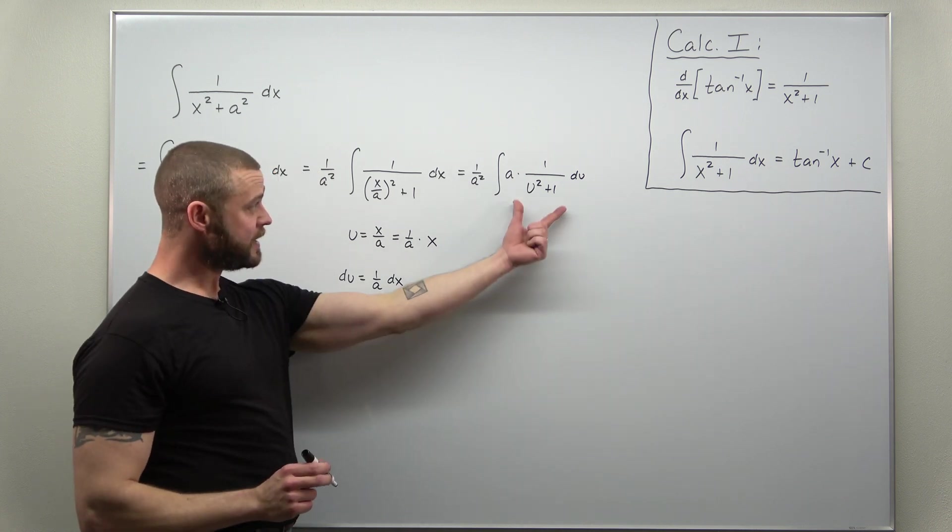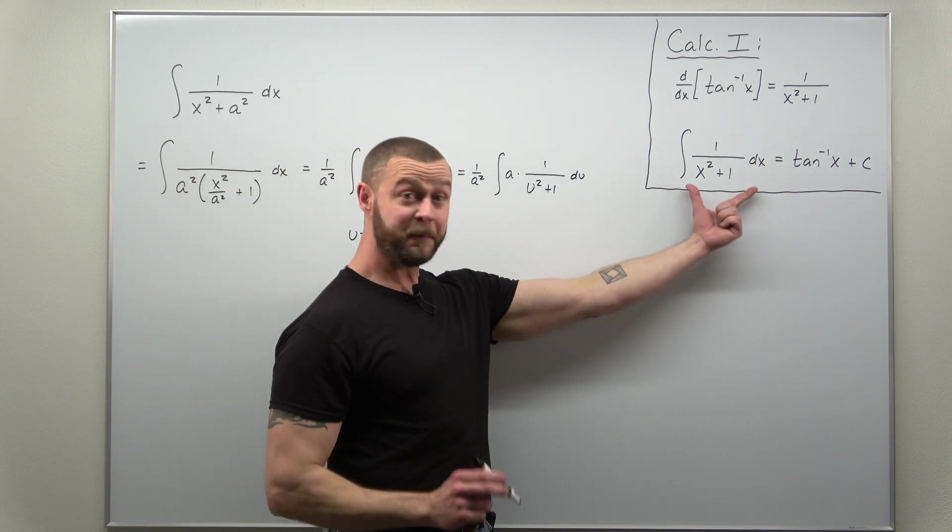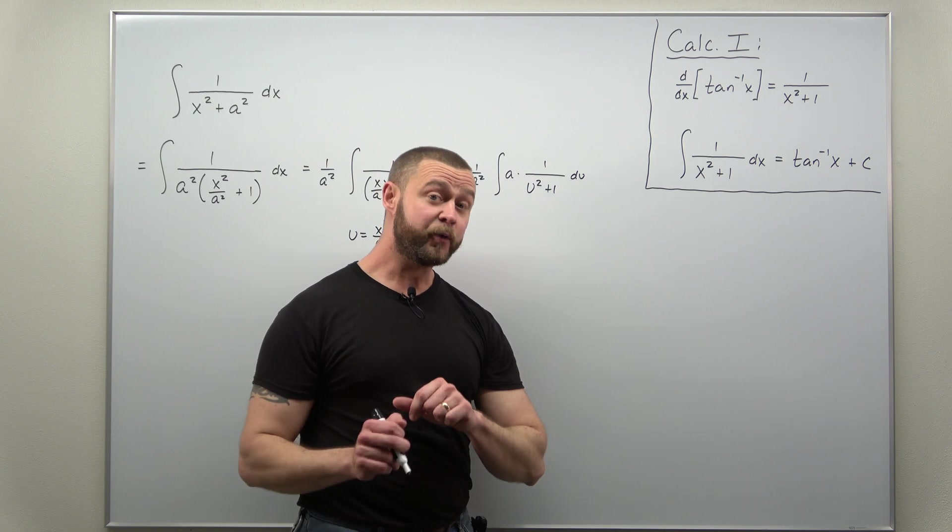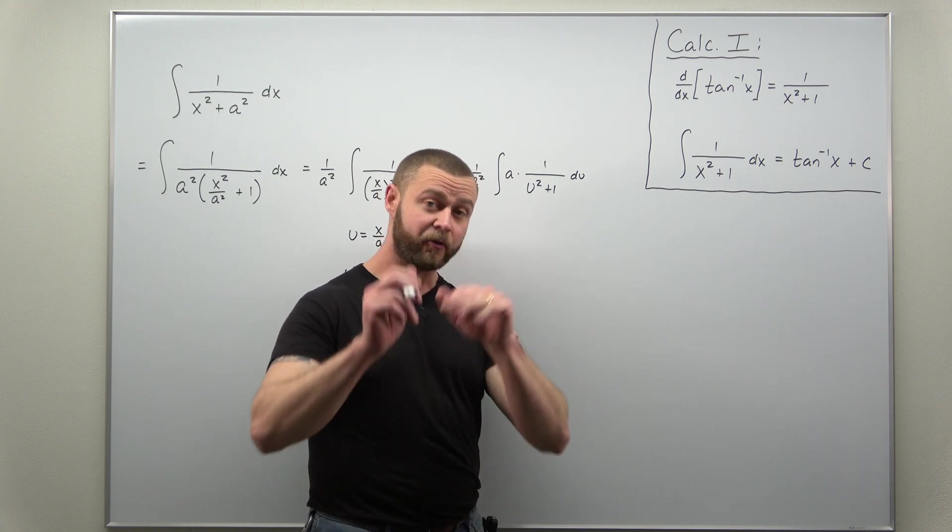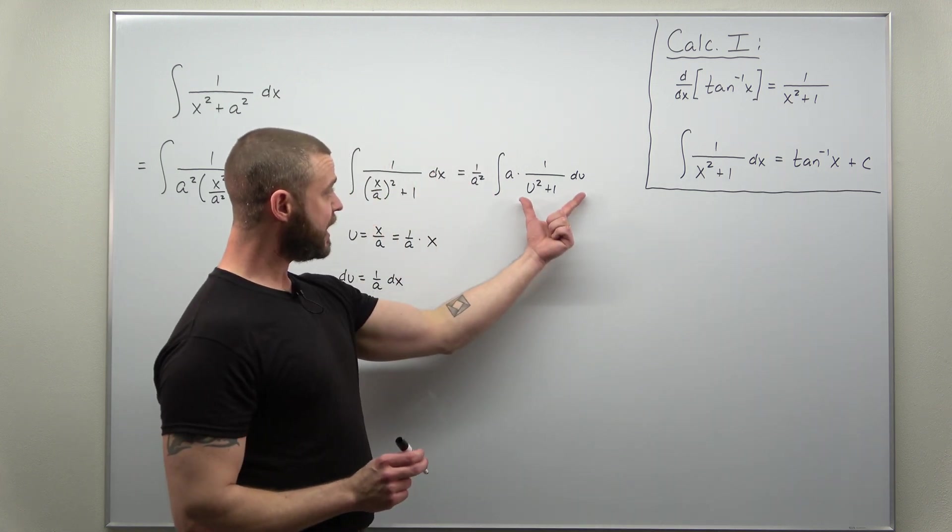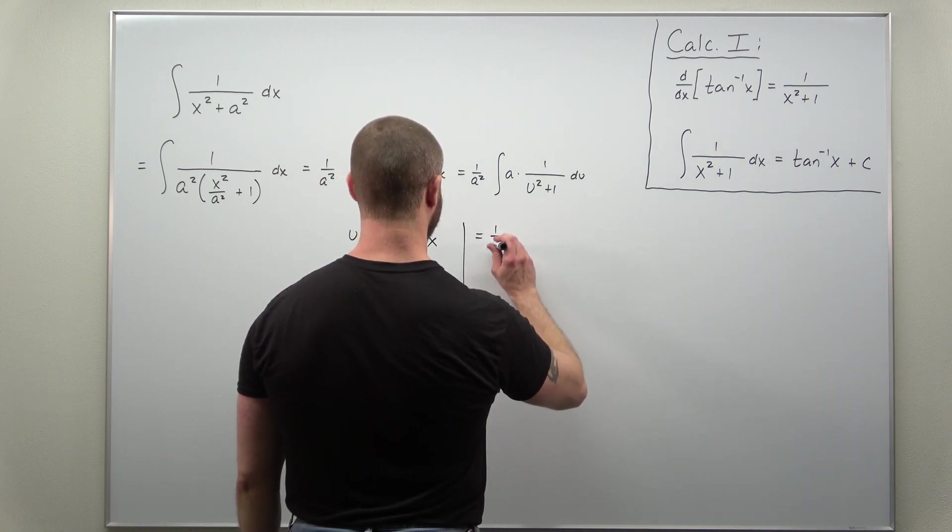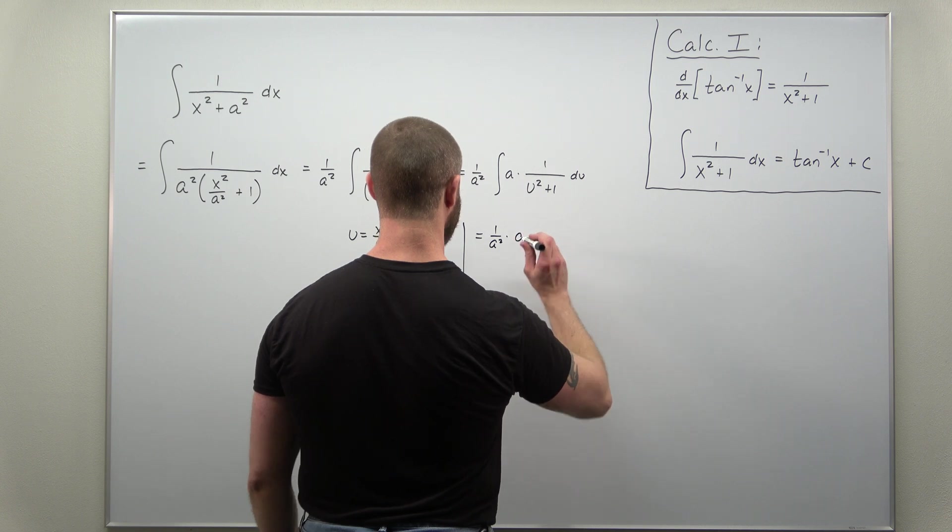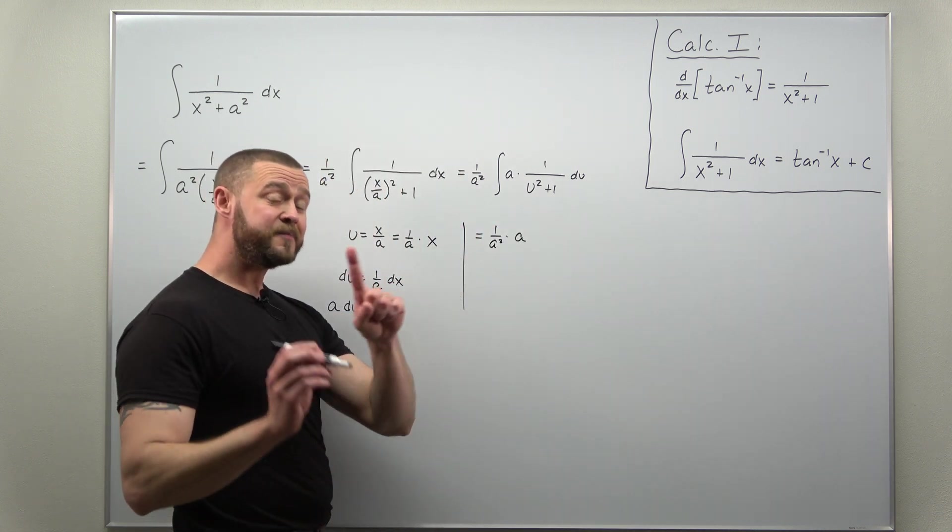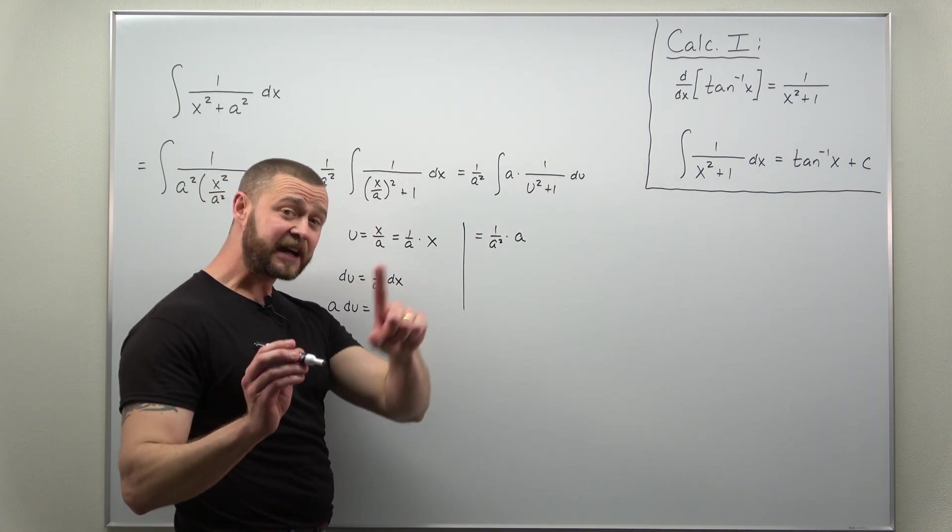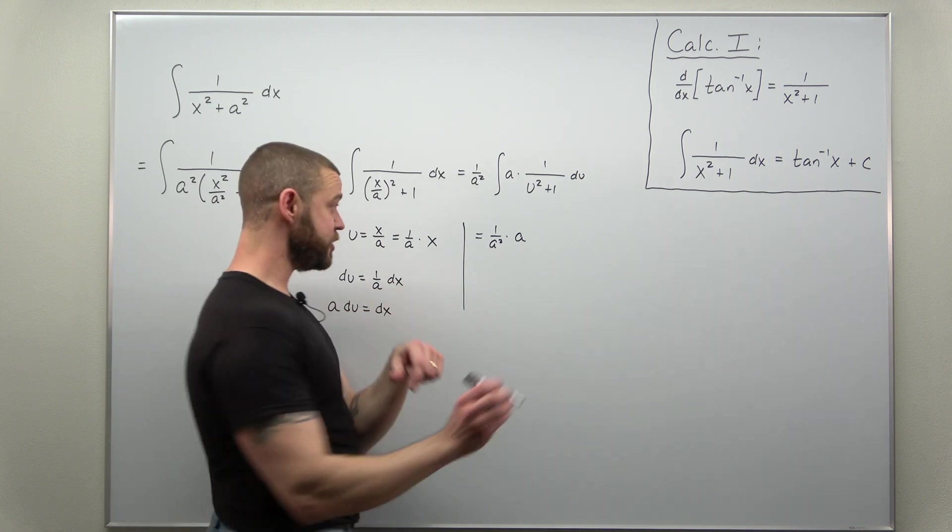And that now is exactly this basic antiderivative but written with u as the variable rather than x. So when you go ahead and integrate this, you have 1 over a squared times a—that's going to become not inverse tangent of x but inverse tangent of u.